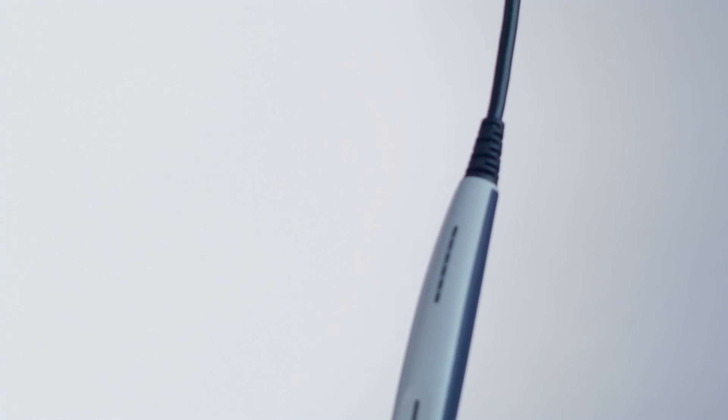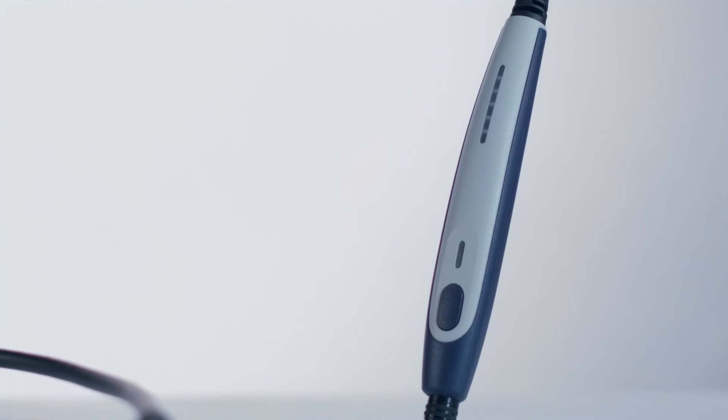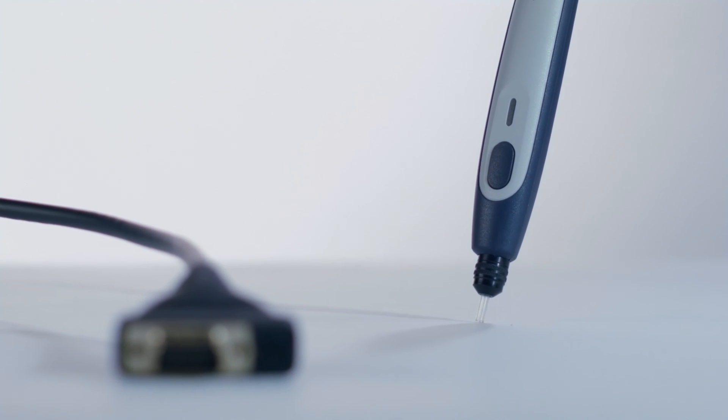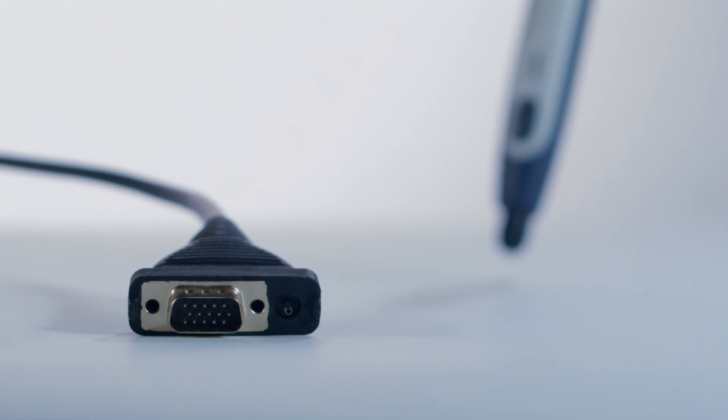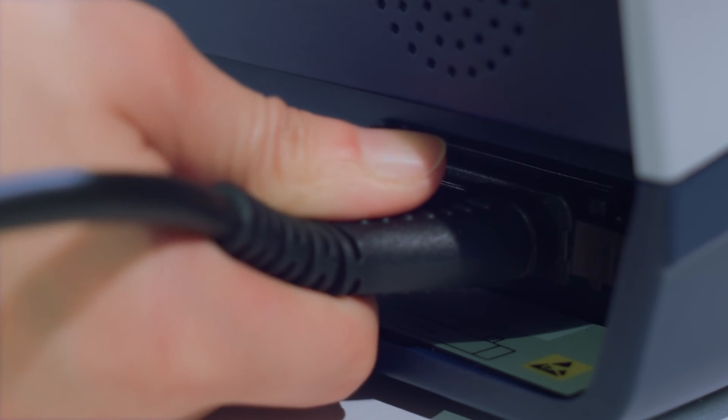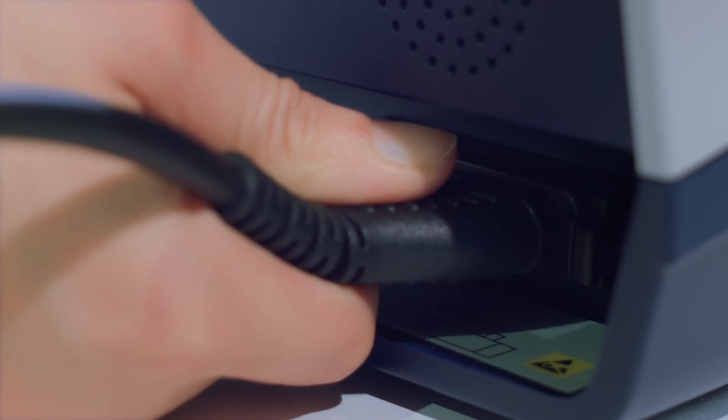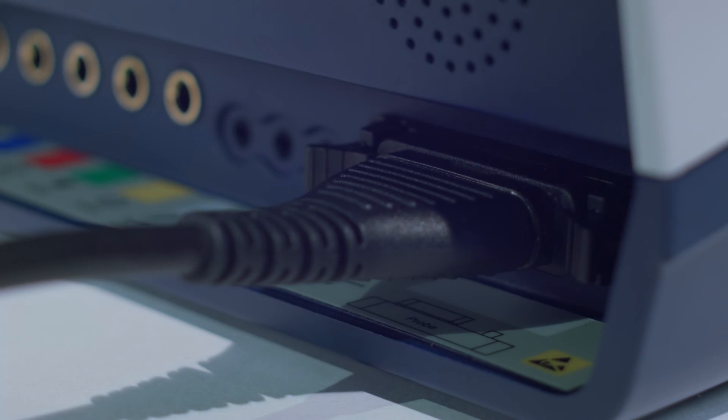The pen probe comes specifically calibrated for the base unit and can be used right away. Attach the probe by gently pushing the connector into the jack labeled Probe. The brackets to the left and right of the jack will close automatically and the probe will sit tight and safe.